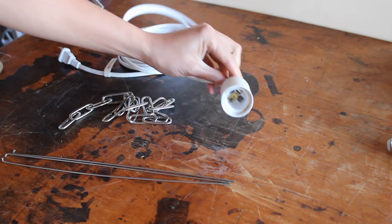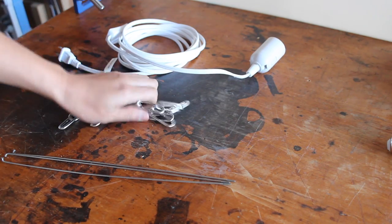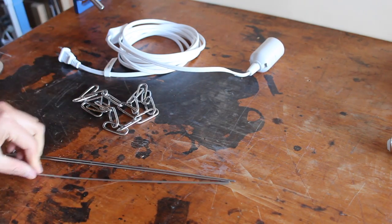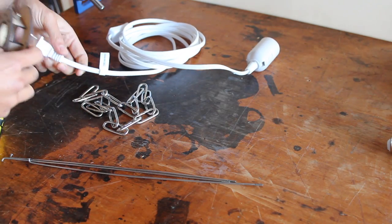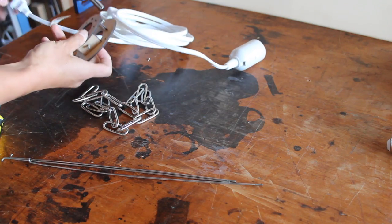For the rest of the lamp, I'll be using this hanging light cord, some chain from a hardware store, and these spokes from an old bicycle wheel. This little hat is what the lampshade will eventually attach to.